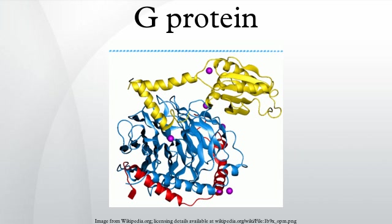G-proteins are important signal transducing molecules in cells. Malfunction of GPCR signaling pathways are involved in many diseases, such as diabetes, blindness, allergies, depression, cardiovascular defects, and certain forms of cancer. It is estimated that about 30% of modern drugs' cellular targets are GPCRs. The human genome encodes roughly 800 G-protein coupled receptors, which detect photons of light, hormones, growth factors, drugs, and other endogenous ligands. Approximately 150 of the GPCRs found in the human genome have still unknown functions.